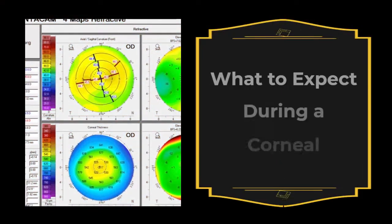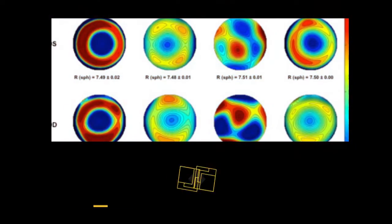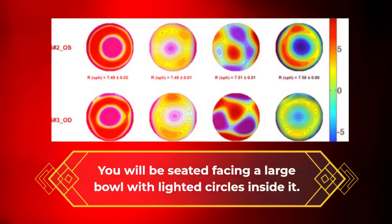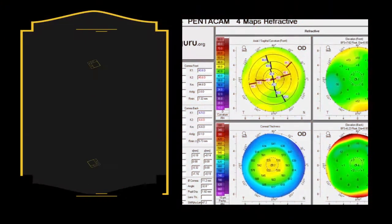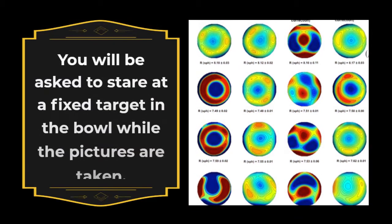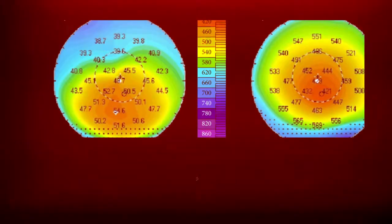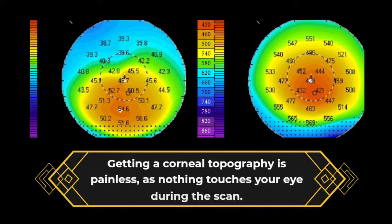What to expect during a corneal topography scan. You will be seated facing a large bowl with lighted circles inside it. The chin and forehead rests keep your head secure to get the clearest images. You will be asked to stare at a fixed target in the bowl while the pictures are taken. The scan only takes a few seconds, but it may need to be repeated a few times. Getting a corneal topography is painless, as nothing touches your eye during the scan.